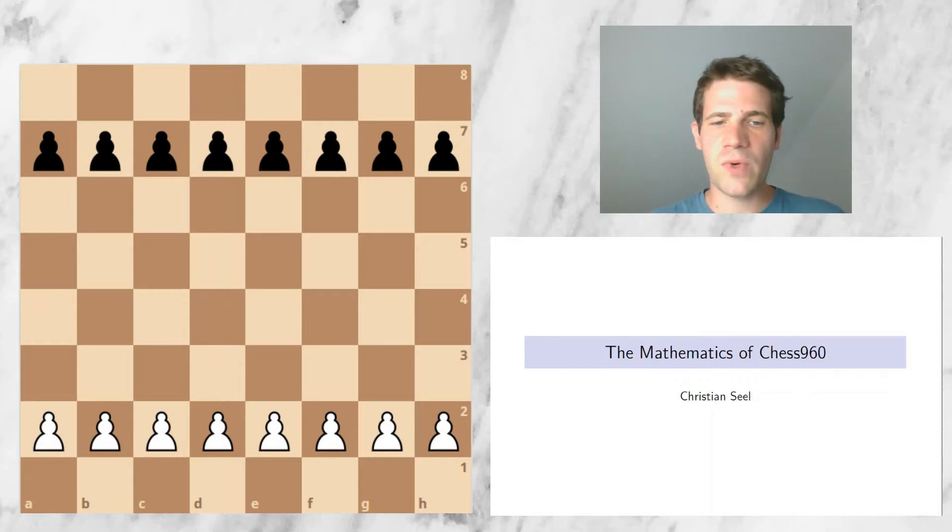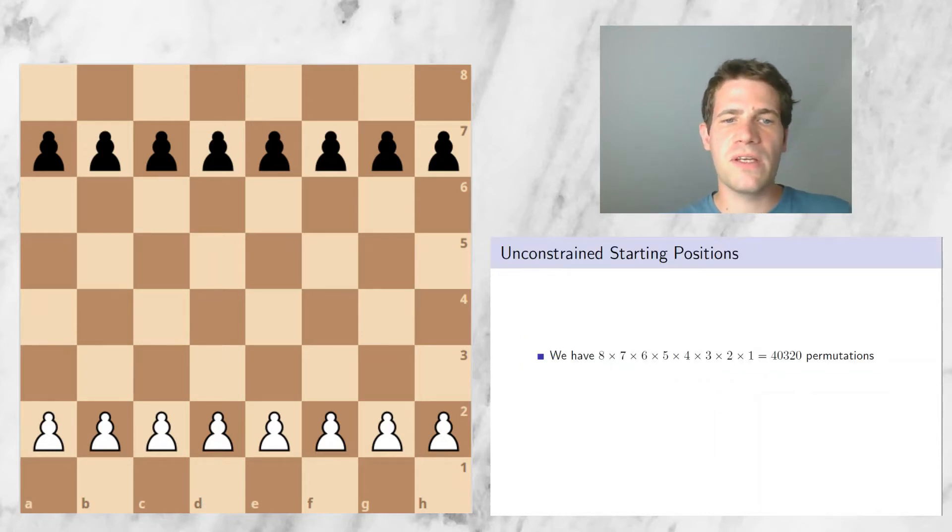Now the first idea that you might get is, well, you want to arrange eight pieces on eight different squares. If these eight pieces were all different, you would have eight options of placing a piece on A1. Then this piece would be out, and you would have seven options of placing some piece on B1 and so on. In total, after having placed two of these pieces, it would be eight options for A1 times the seven pieces which have not yet been used for B1, and then so forth for C1, D1, and so on. So what we would get is eight factorial, or 8×7×6×5×4×3×2×1 different permutations.